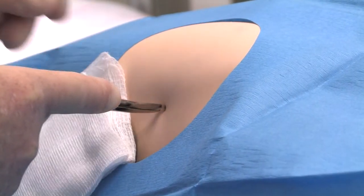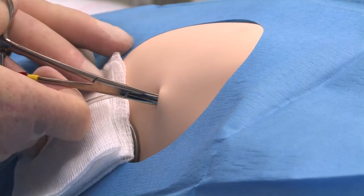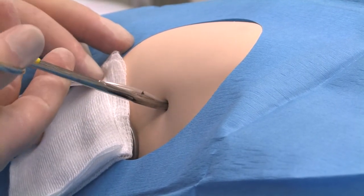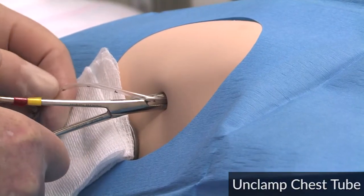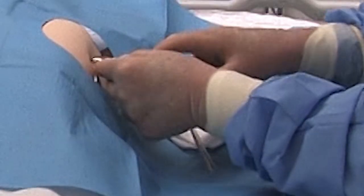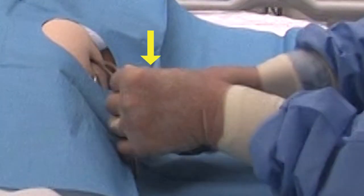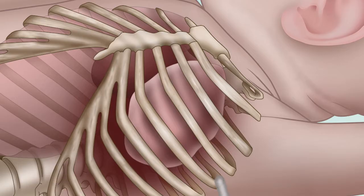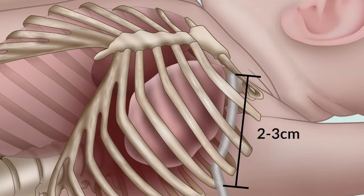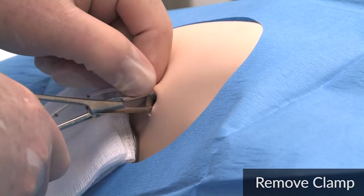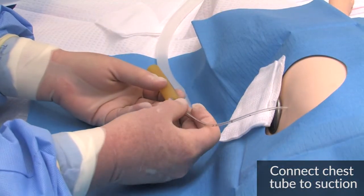Enter the previously made track and enter the pleural space. Once inside the space, turn the Kelly clamp 180 degrees. Unclamp the chest tube. To ensure the chest tube is directed anteriorly, drop your wrist while advancing the chest tube into the patient. Direct the tube anteriorly to the apex of the thorax, to the predetermined length, assuring all side holes are inside the chest. This distance is approximately 2 to 3 centimeters for infants less than 1500 grams, and approximately 3 to 4 centimeters for infants greater than or equal to 1500 grams. Remove the clamp, being sure not to dislodge the chest tube. Connect the chest tube to suction.